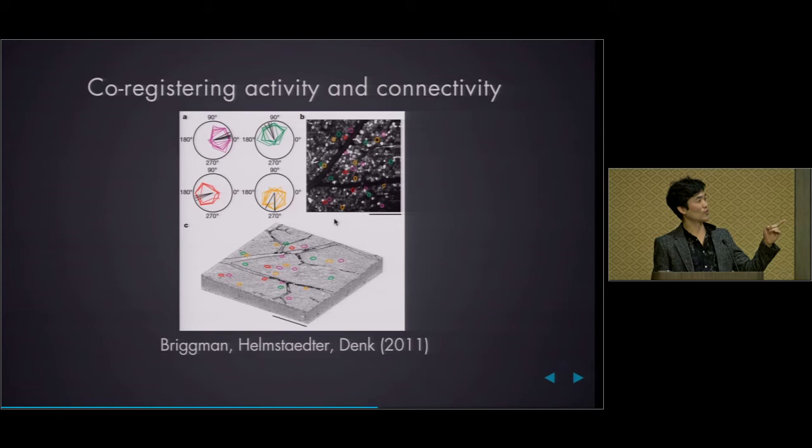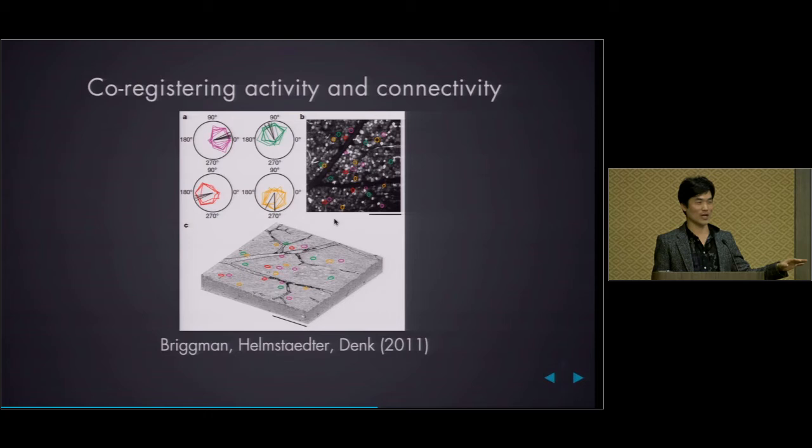We are planning to produce the functional connectome with Thomas Weider, using two-photon imaging to find the visual responses of a thousand ganglion cells, then hopefully reconstruct the entire retinal connectome. In the past we've only done sparse wiring diagrams, but we want to do the full thing. That project has just started.